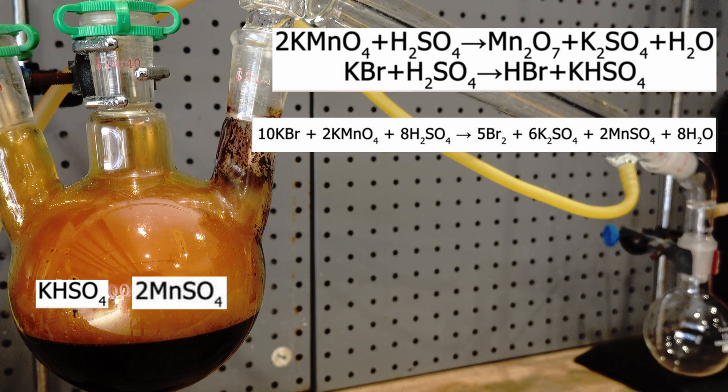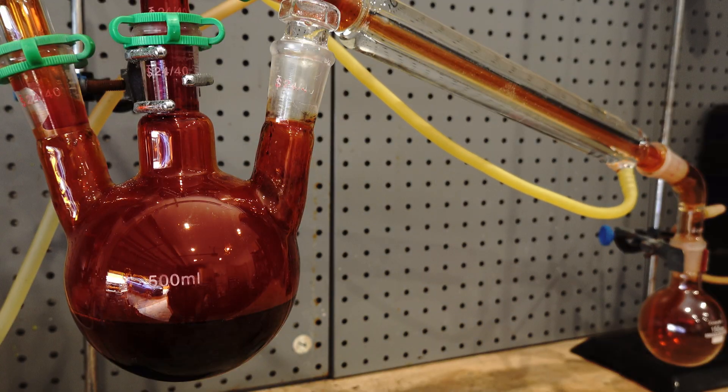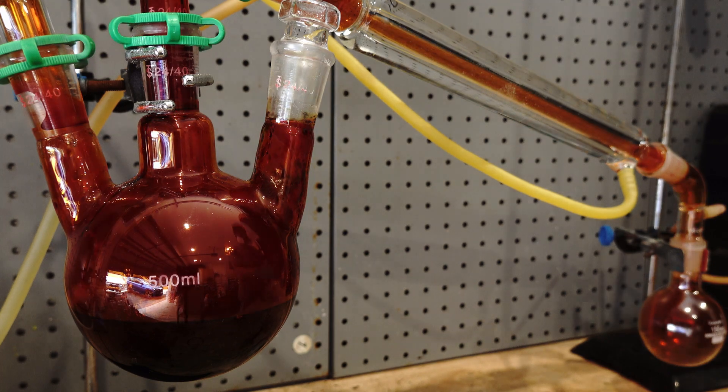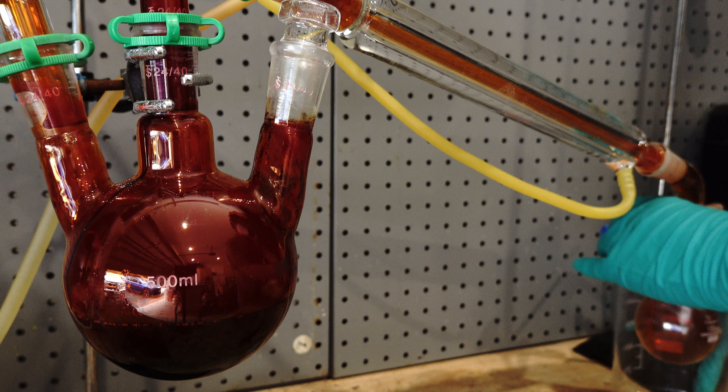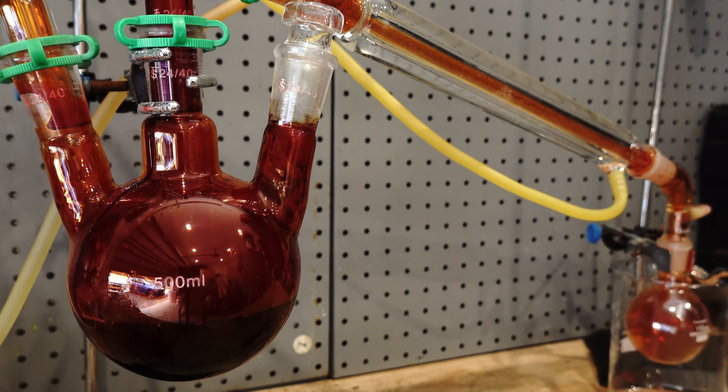As the reaction continues, the colour of the apparatus changes as the density of the Bromine vapour increases. I added an ice bath to the collection flask to hopefully further condense any escaping Bromine vapour.